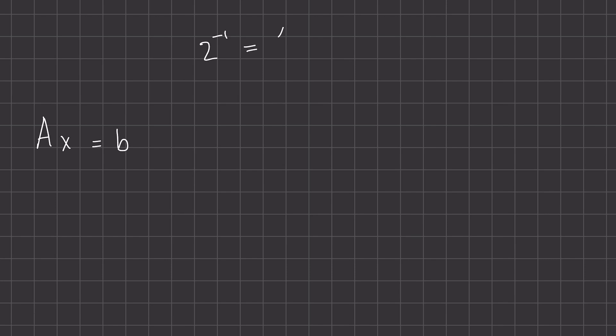So that when we then multiply two times this one half, we would get one. In the same way, square matrices, so matrices where the number of columns and rows are equal, can have inverses.